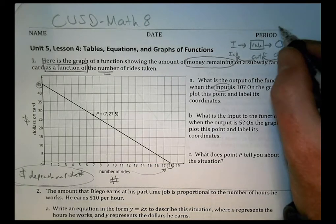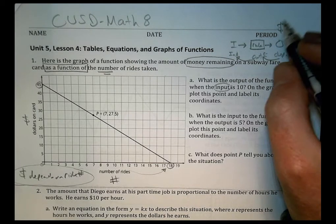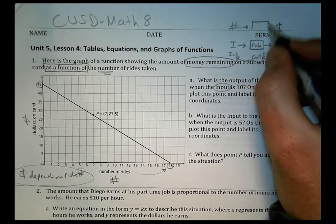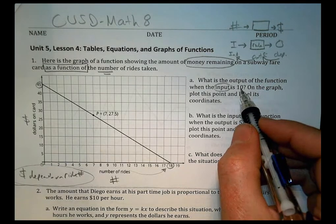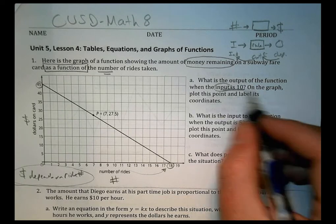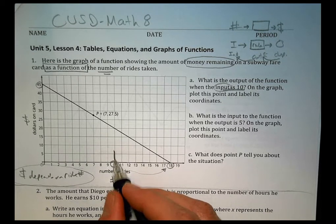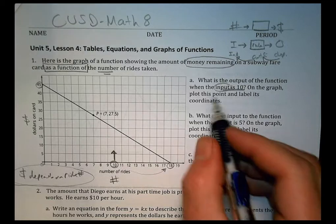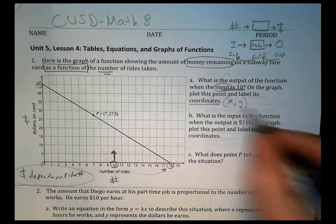We talked before about our input was over here. That was our thing. And we put it into the rule, and that gave us our output there. We talked before our independent and dependent. This was our independent variable, and this one was our dependent variable. The dependent variable is a function of this one here. So in our case, our dollars is our dependent. The dollars we have left depends upon the number of rides.